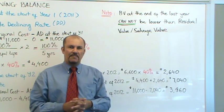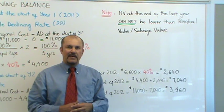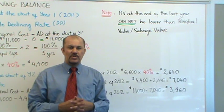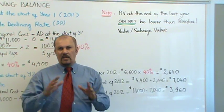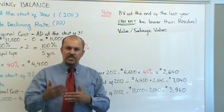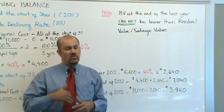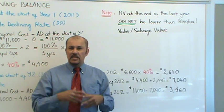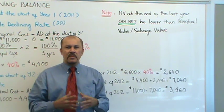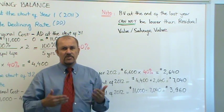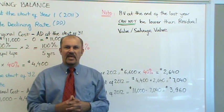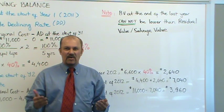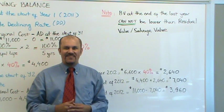That pretty much wraps up our discussion on the double declining balance method. As you can see, this is one of the more complicated methods of calculating depreciation expense — a lot of different formulae, but try to work through it. Listen to this as many times as you have to, and work through as many examples as you can to get proficient. Soon you'll have this down pretty easily to reproduce in an exam situation. This is Professor Lazarus signing off, and as I always like to say — accountants work their assets off. Thank you.